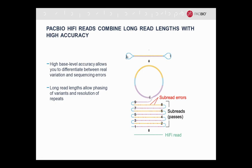How are we able to do that? In the figure on the right, you'll see our SmartBell, which is a template molecule for sequencing. The nature of the SmartBell is such that when it opens up, we can sequence multiple times all around the SmartBell over and over again. Even though individual sub-reads may have errors, those errors are completely random in nature. By generating a consensus accuracy from that one single molecule, we can generate HiFi reads. In our amplicon sequencing and targeted sequencing application, HiFi reads can be as long as 15,000 base pairs in length and are over 99% accuracy. This combination of high accuracy with long read lengths allows you to phase variants and also resolve repeat regions, so any variants you detect are real and not just sequencing errors.